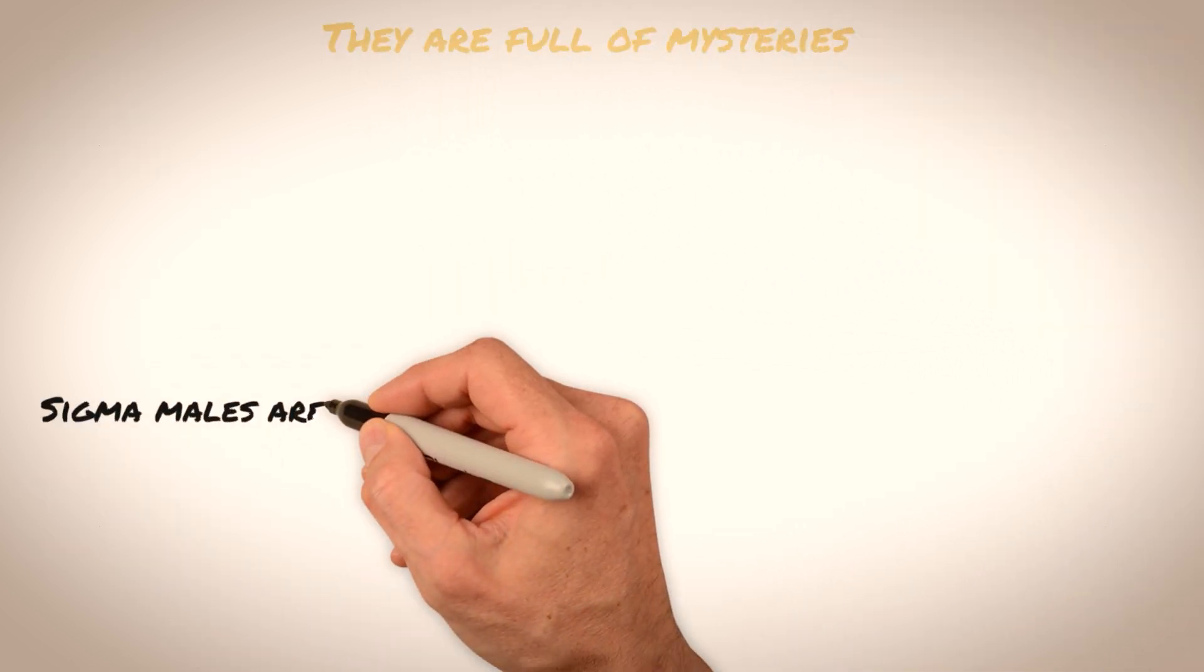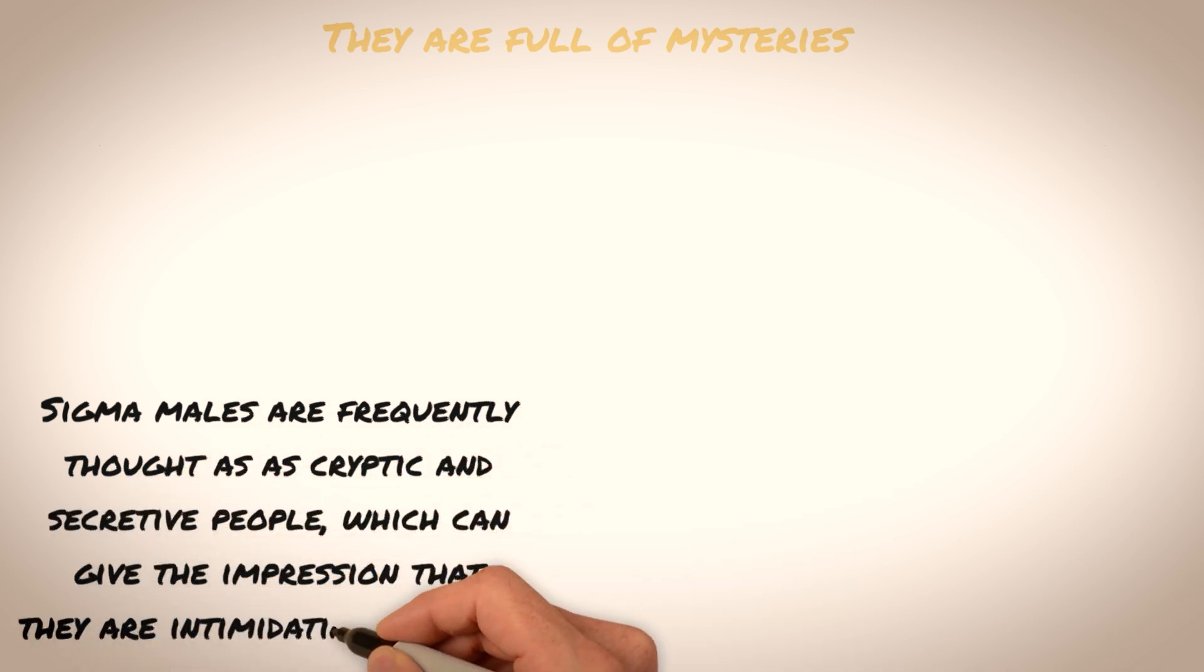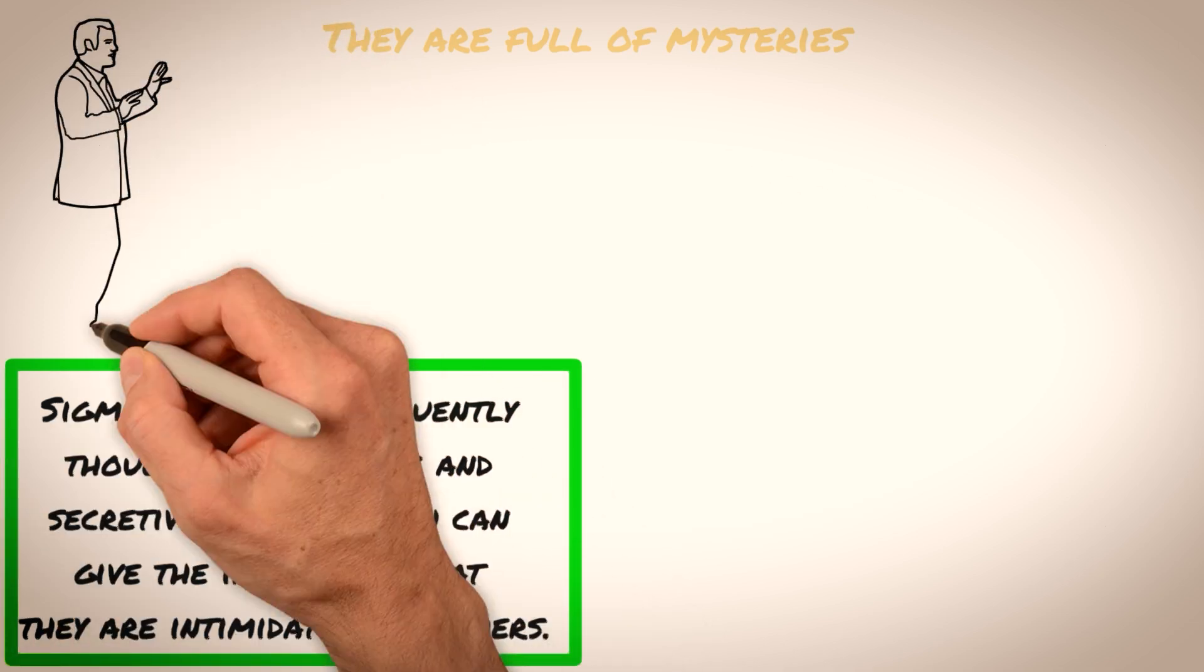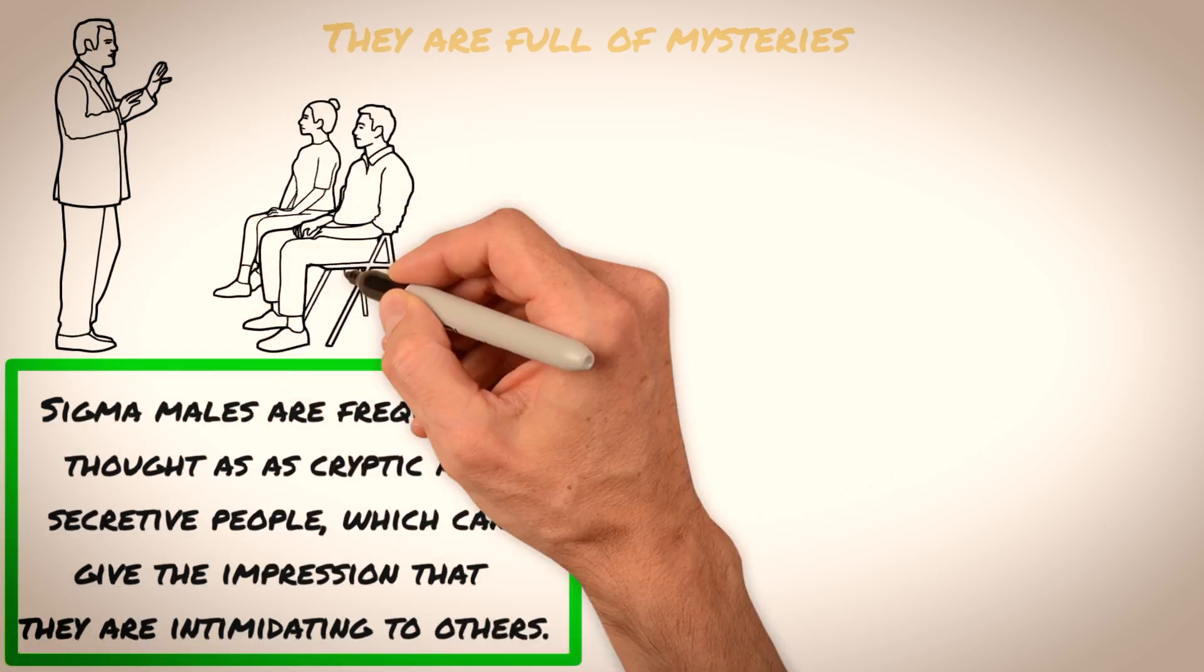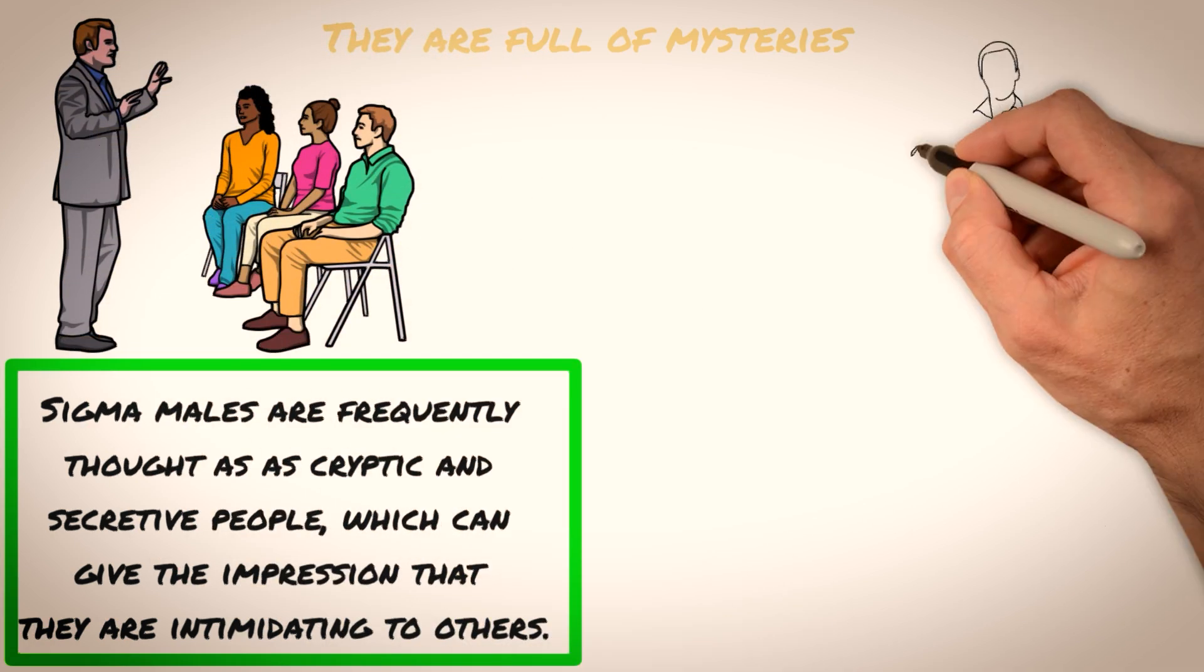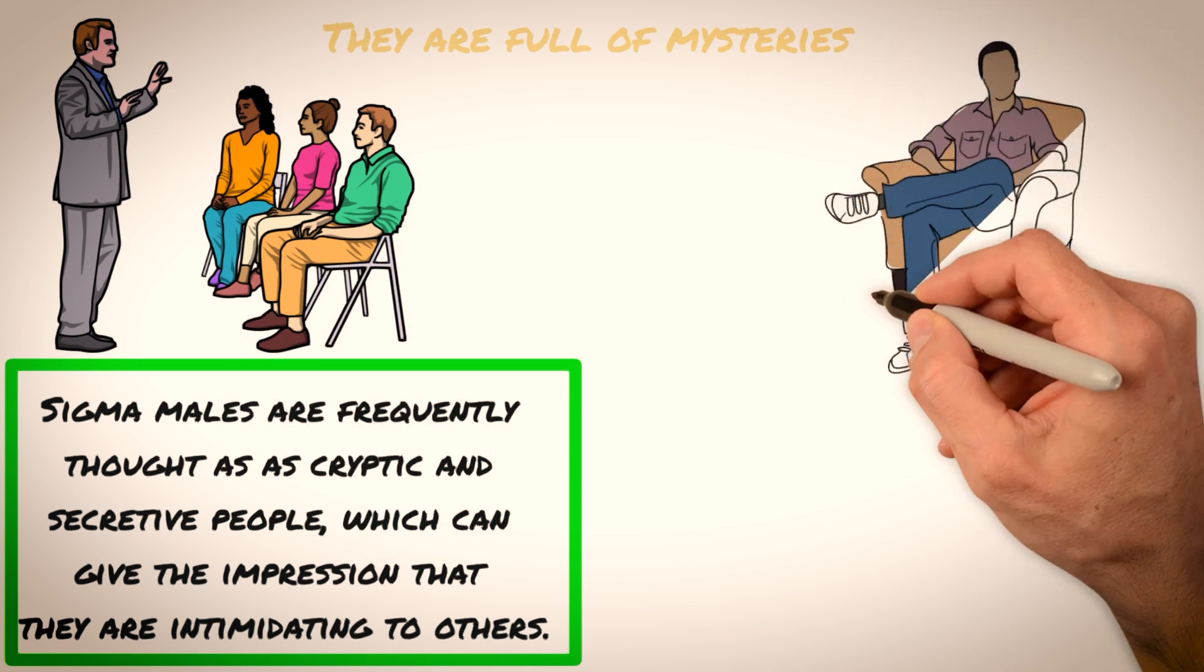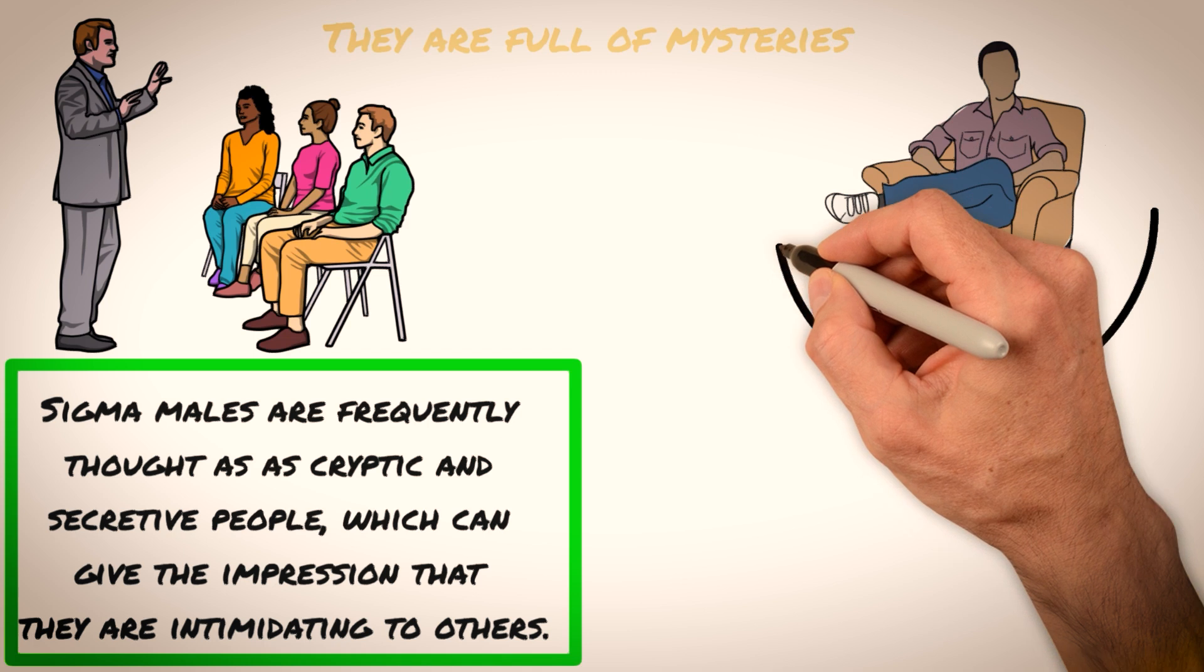They are full of mysteries. Sigma males are often regarded as enigmatic and mysterious individuals, which can make them seem intimidating to others. This is due in large part to their unique personality traits and behavior patterns, which are not always easy to decipher or understand. One of the main characteristics that contribute to the air of mystery surrounding Sigma males is their independent and non-conformist nature.